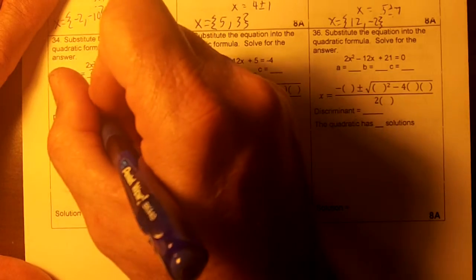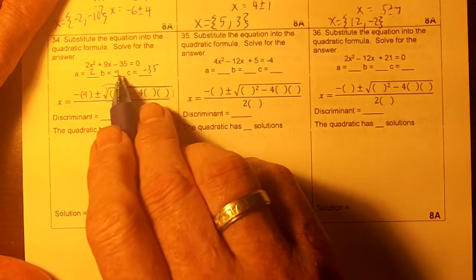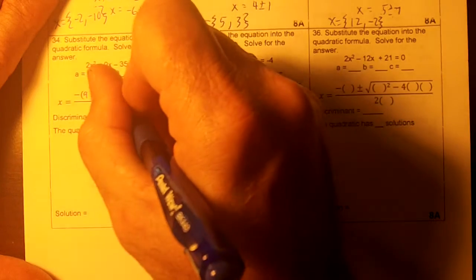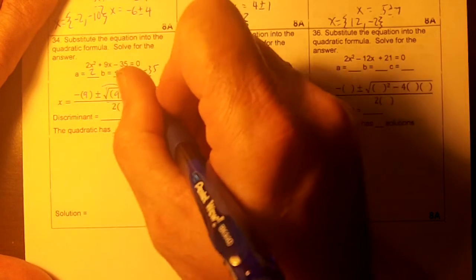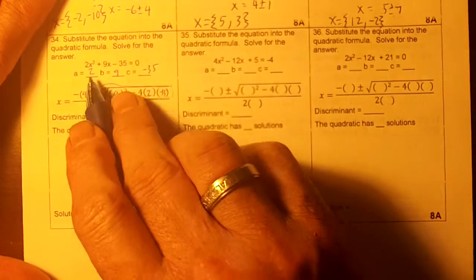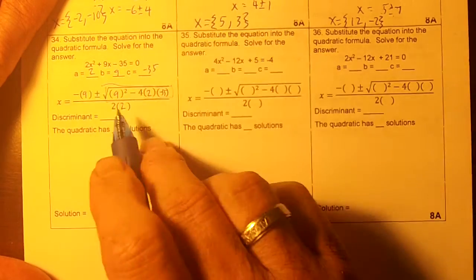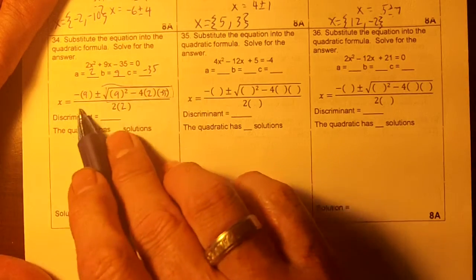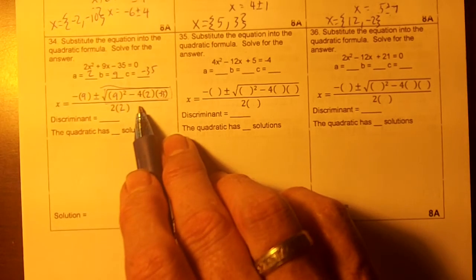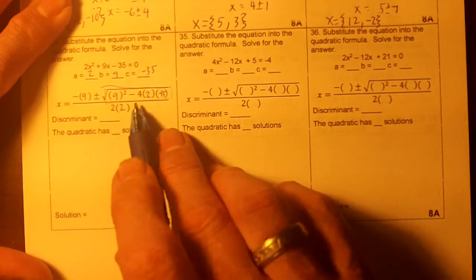So our B is 9. Our B squared is 9 again, minus 4AC, 2 and negative 35. And then our A is 2. Now then on your test, it may have this just set up and it may ask which one's done correctly. So make sure you can set this up.